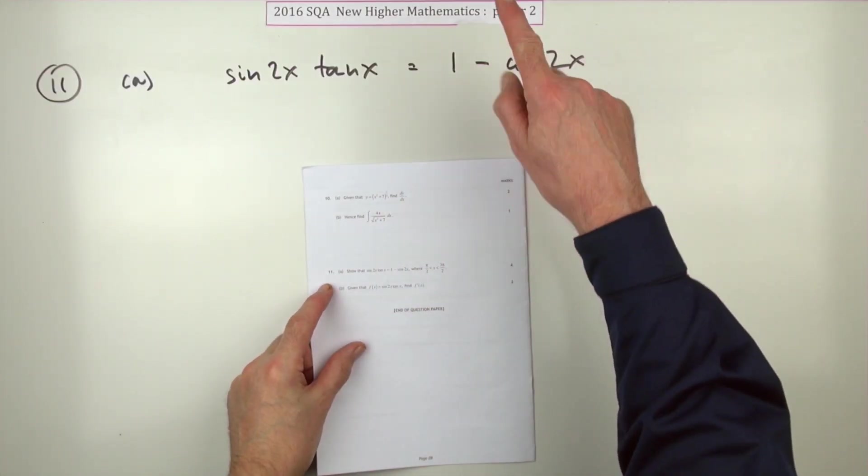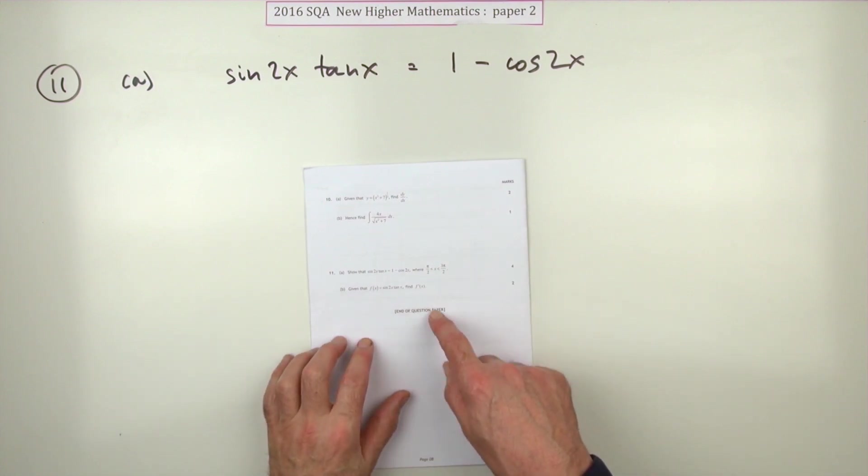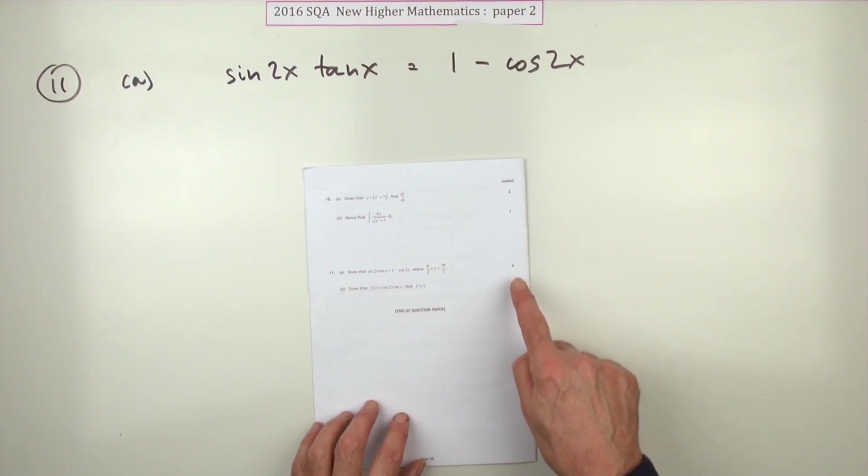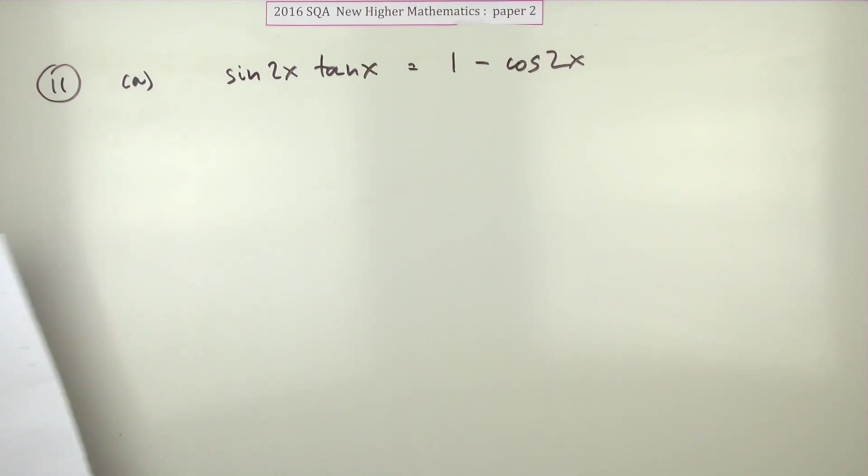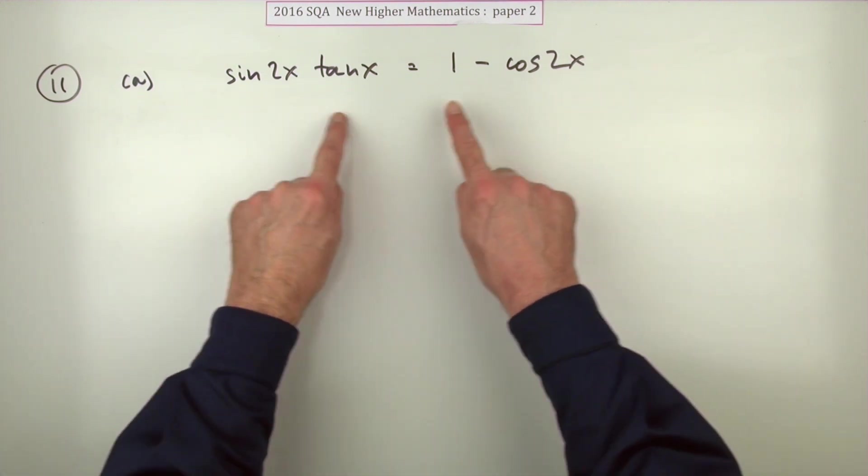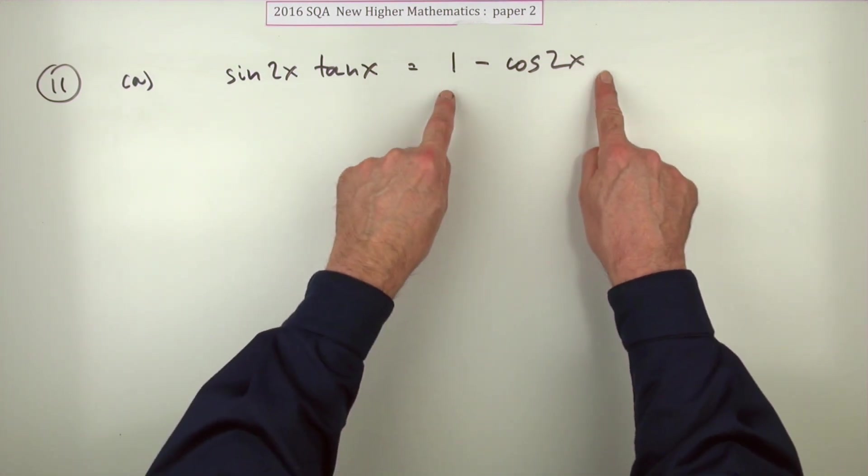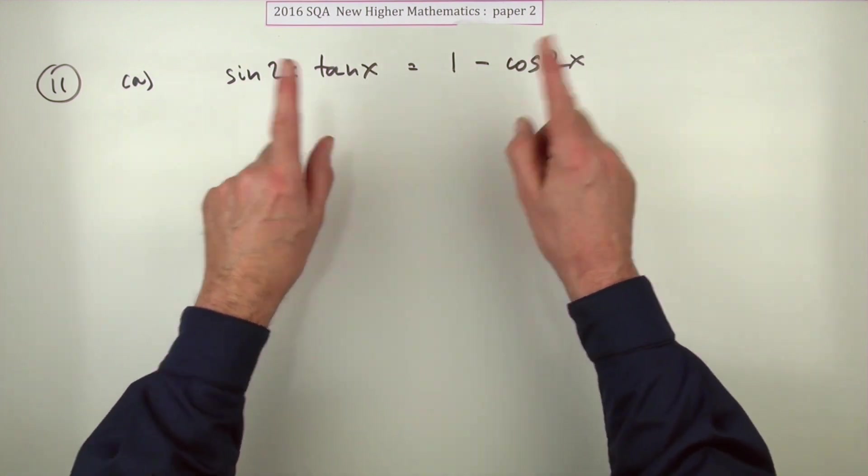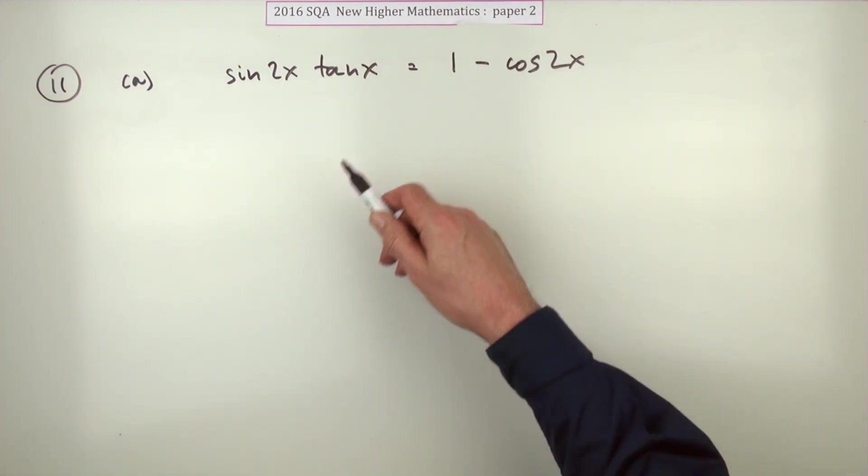Question 11, the final question on Paper 2 of the 2016 Higher Maths. A trigonometric identity worth four marks. This is an identity, not an equation to solve - these two sides are identical for all values of x. If you try to solve it, you just end up with 0 equals 0.